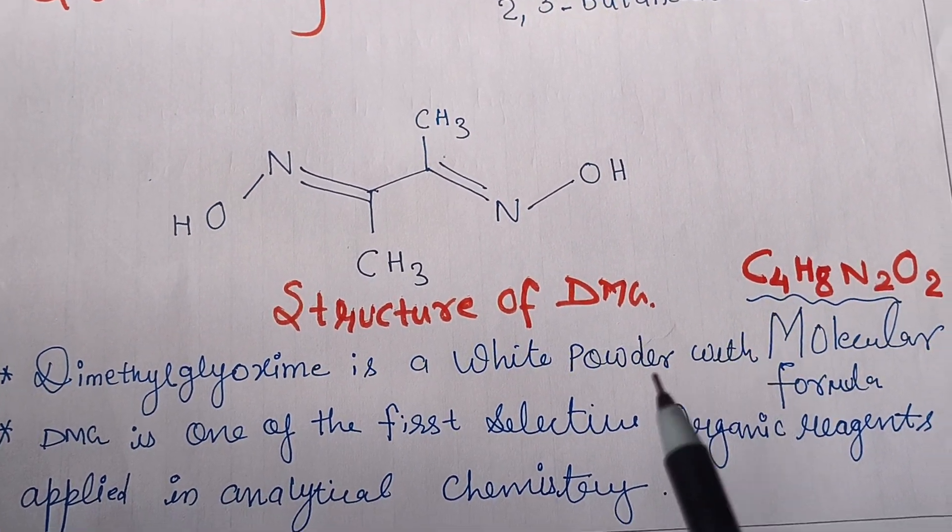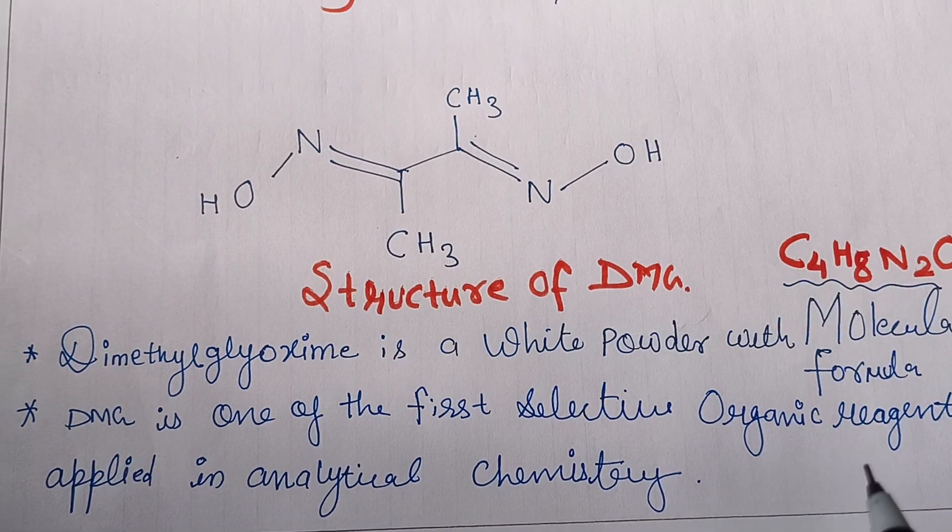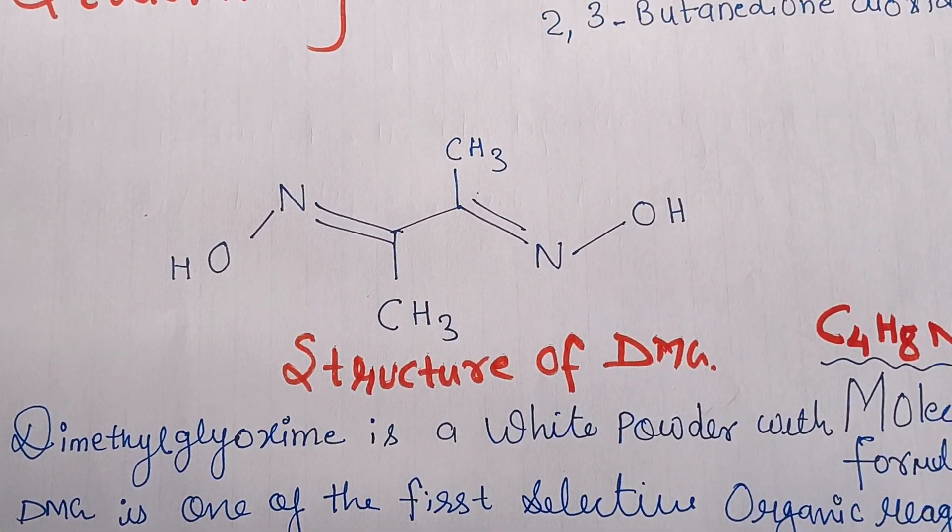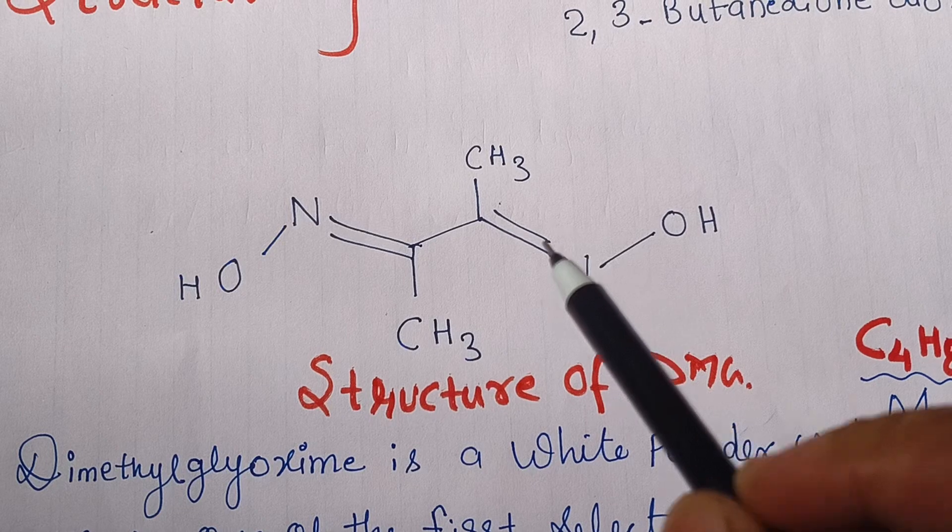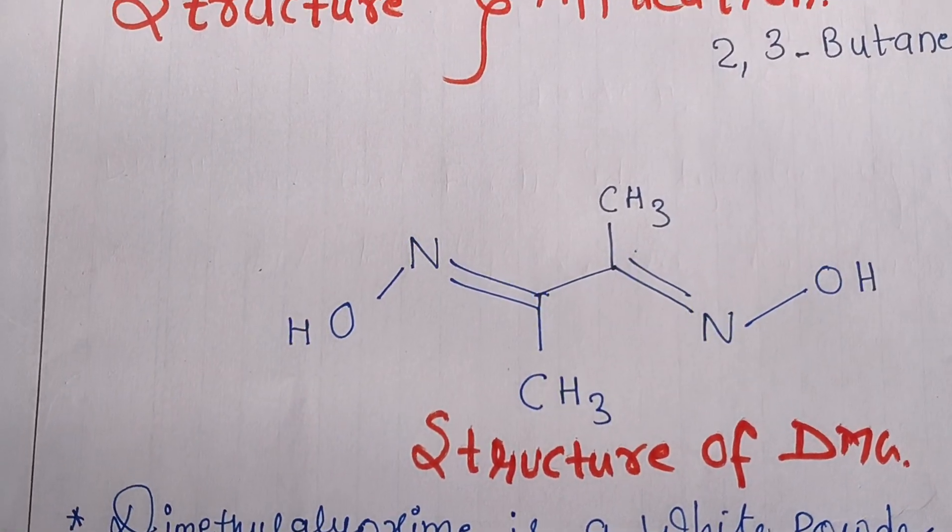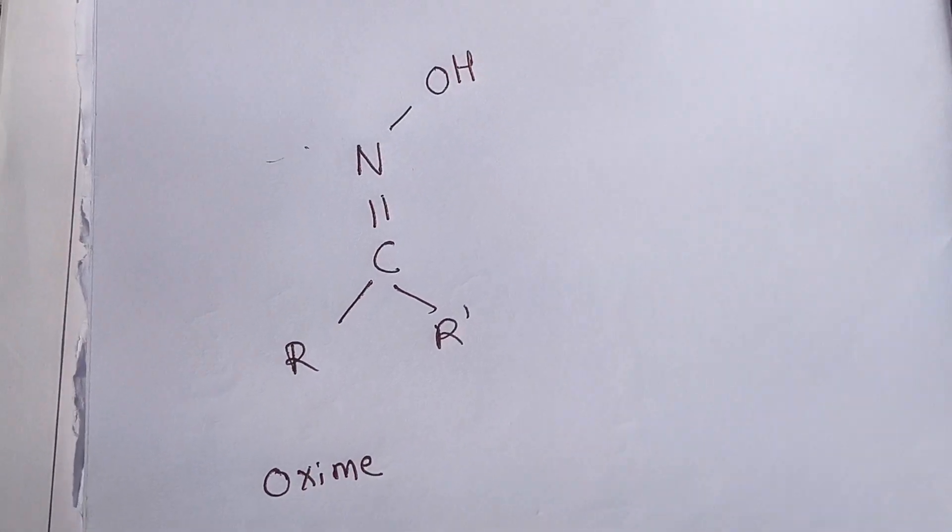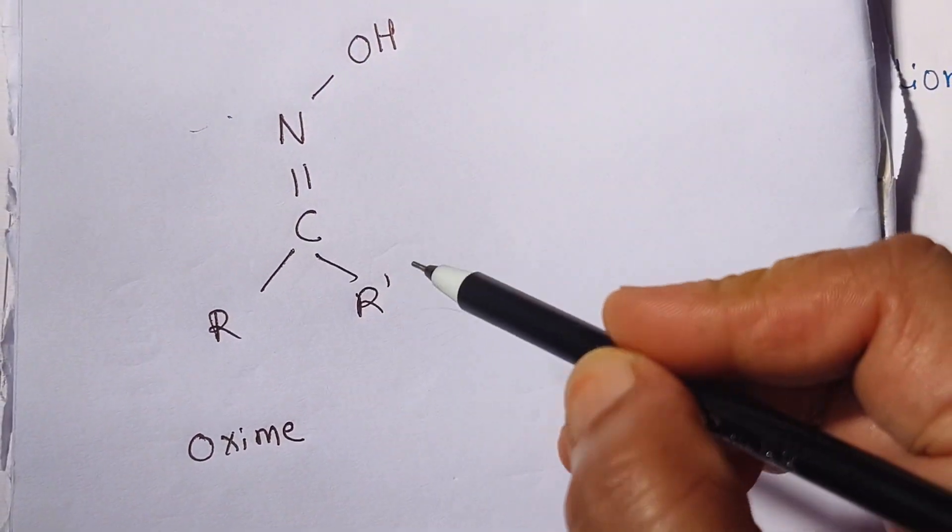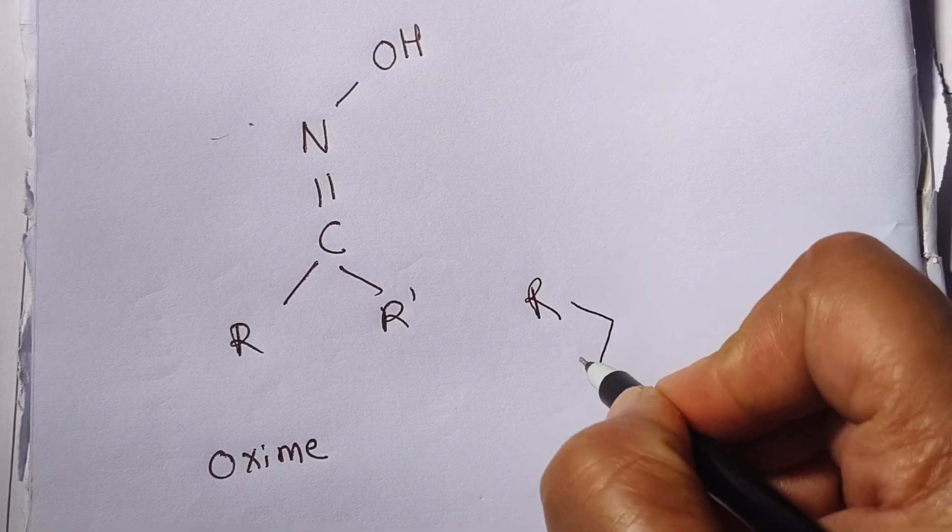It is the first selective organic reagent applied in analytical chemistry. This is the oxime group - C double bond N-OH. You have studied this in your degree classes when studying the chapter of aldehydes and ketones.